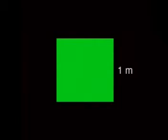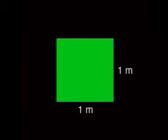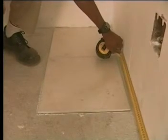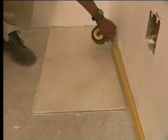Here we could have one meter by one meter, and this multiplies and gives us an area of one meter squared. When we measure area, we want to know how many of these squares fit inside the area we're trying to measure.